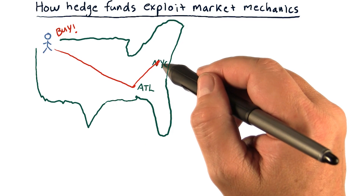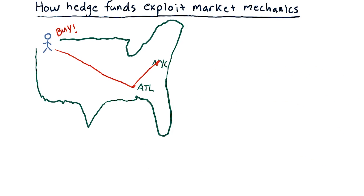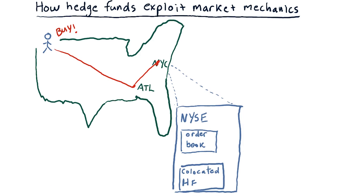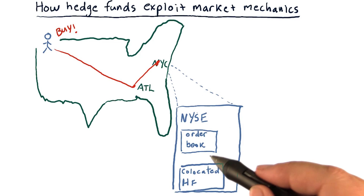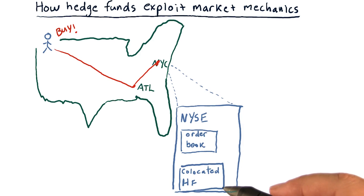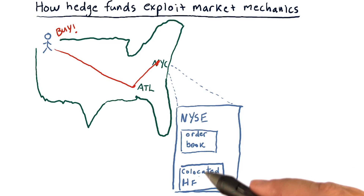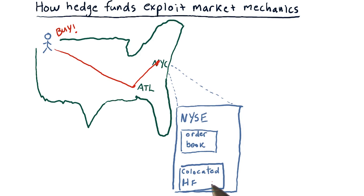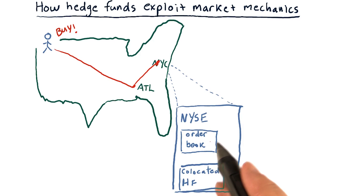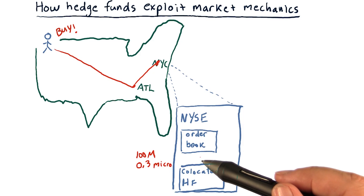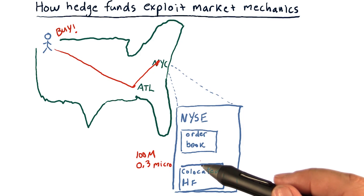Let's zoom in and see what's happening at the exchange in New York City — we've zoomed in to the New York Stock Exchange. The order book there is visible to you over in Seattle, but also to computers that are co-located. Let's suppose our hedge fund has a co-located computer observing the order book as well. Its computer is located maybe 100 meters away from the main exchange computer, which amounts to only 0.3 microseconds for information about the order book to reach that hedge fund computer.